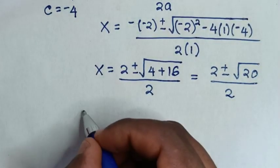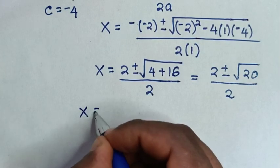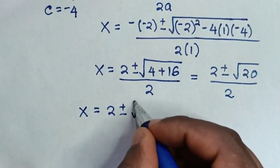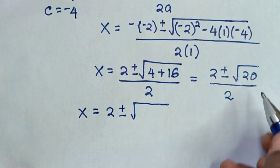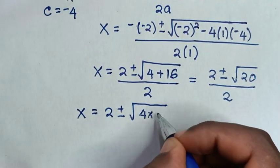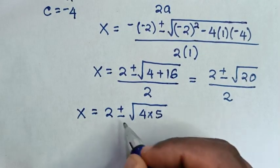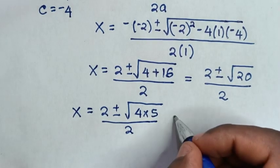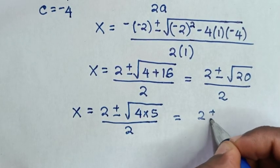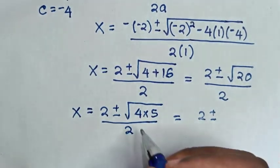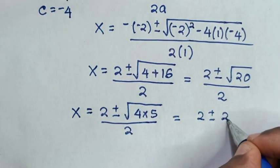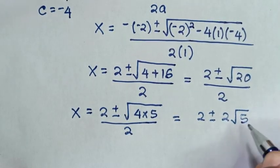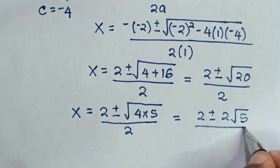Then it will be x is equal to 2 plus or minus square root of 20, which is the same as square root of 4 times 5, then over 2. That simplifies to 2 plus or minus 2 times square root of 5, over 2.